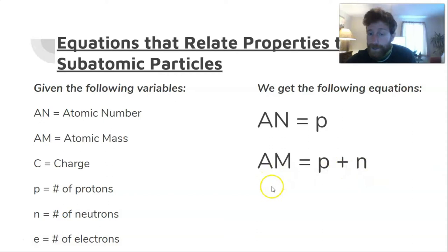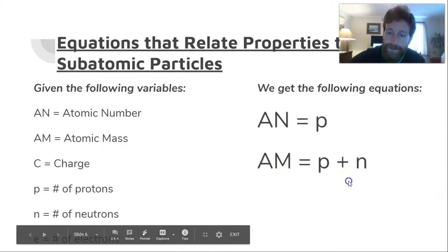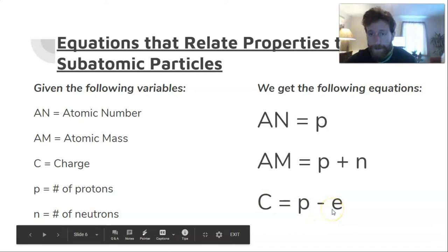And then lastly, the charge is equal to the number of protons minus the number of electrons—minus because electrons are negative. Again, I can rearrange that in any way I want if I know two things and I need to find the third.